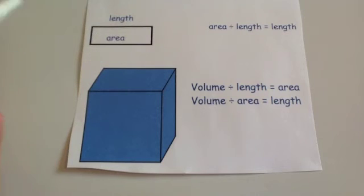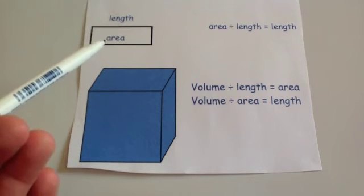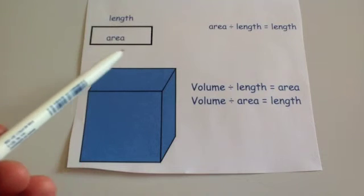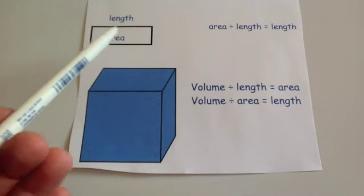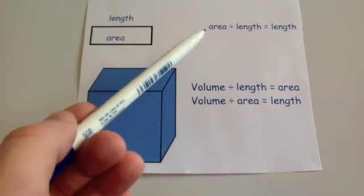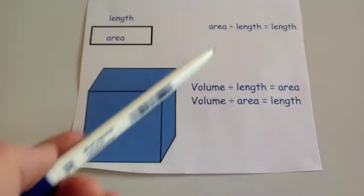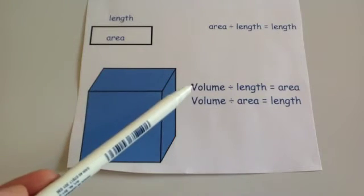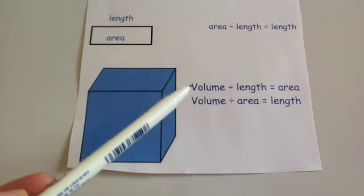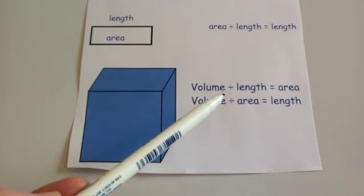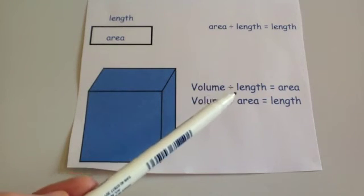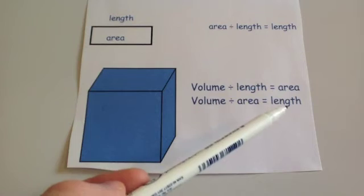Whenever you're dividing, you're going to go back down a dimension. So if you have an area and divide it by a length — for instance, if you had the area of a rectangle and divided it by how long it was — you'd get the width, so an area divided by a length is a length. Likewise, if you divide a volume by a length, you get an area. Or if you divide a volume by an area, that's dividing by two lengths, and you'd be brought back down to a length.